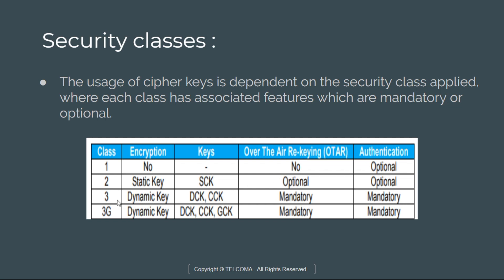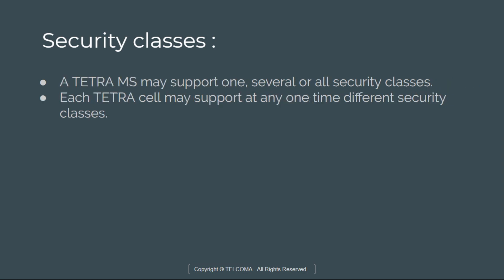We have Class 1, 2, 3, and 3G. Encryption types include no static key, dynamic keys, and SCKs. DCK keys can be over-the-air rekeying (OTIR) — no, optional, or mandatory — and similarly for authentication. A TETRA mobile station may support one, several, or all security classes, and each TETRA cell may support different security classes at one time.